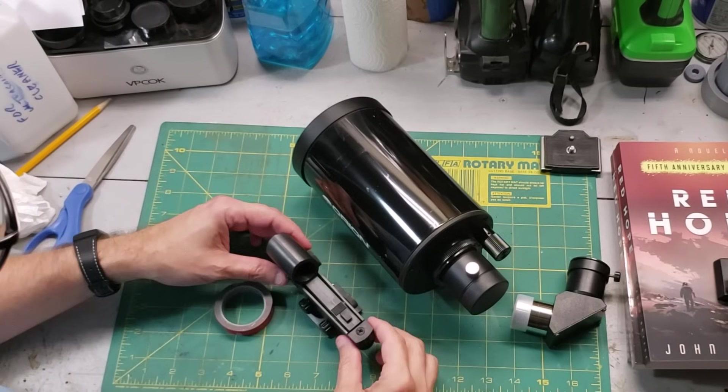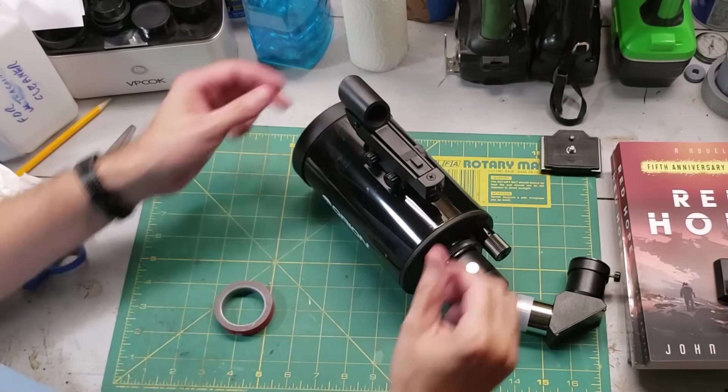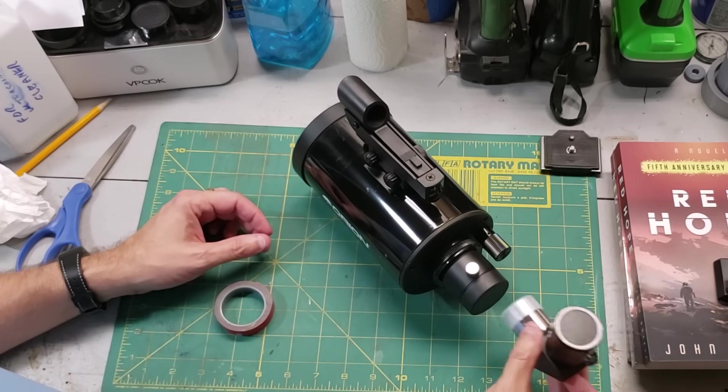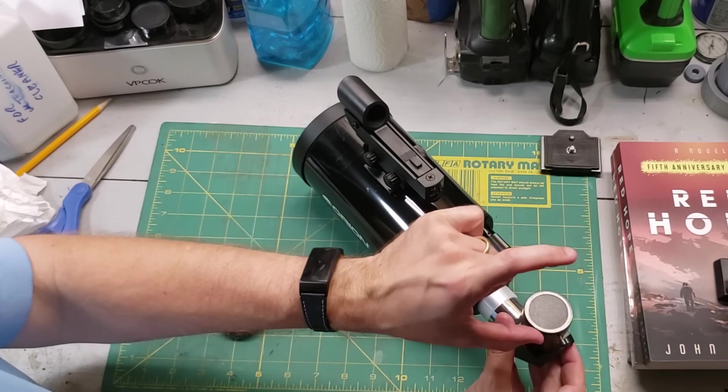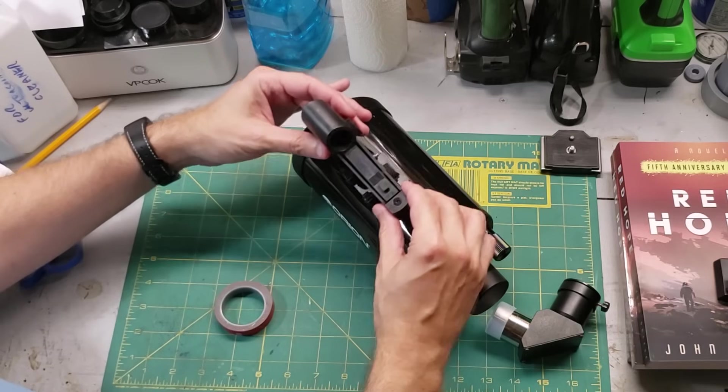And here it is all shiny and clean. So now comes the time when we're going to mount the red dot viewfinder. I could mount it right on top. The problem with that is when I put the diagonal in, if I have a tall eyepiece, it's going to be hard to see through the viewfinder.